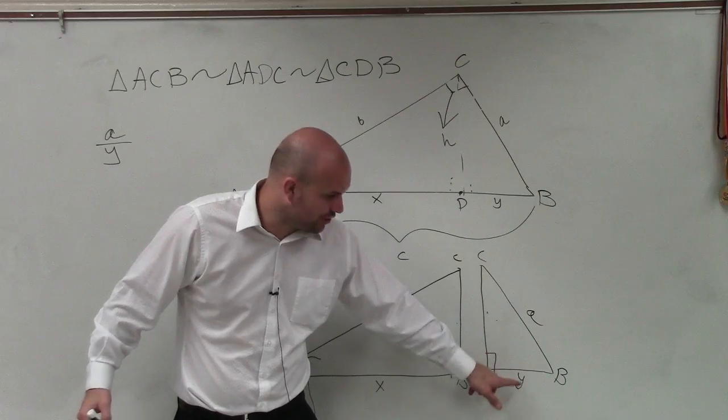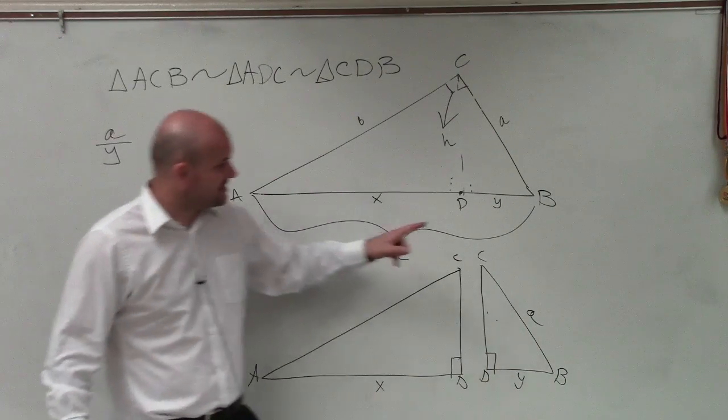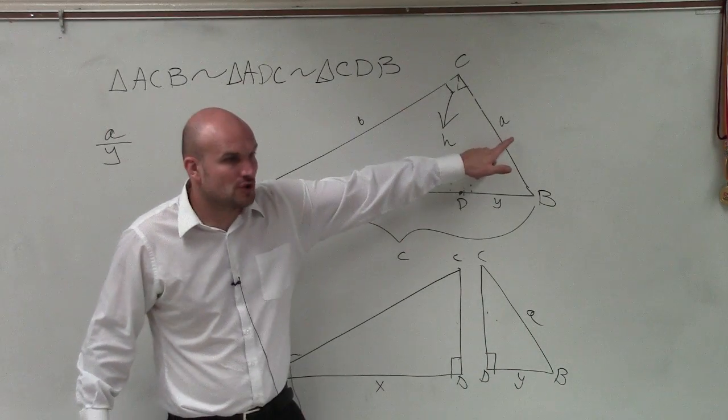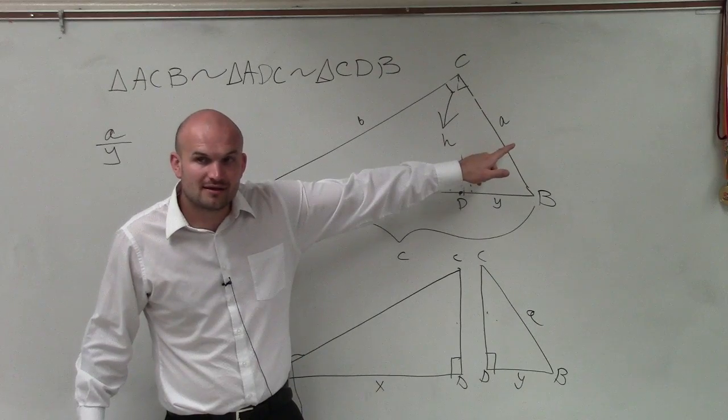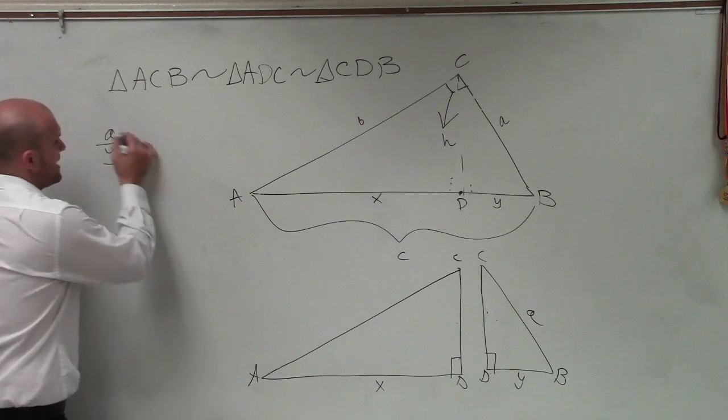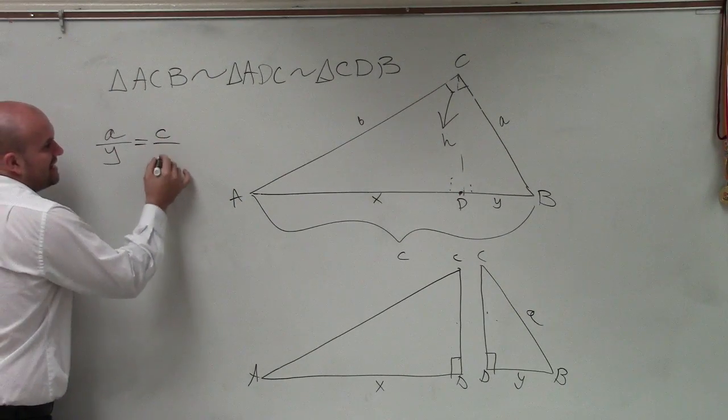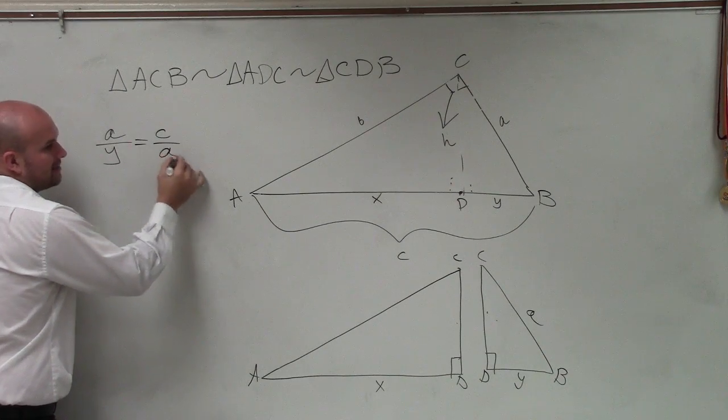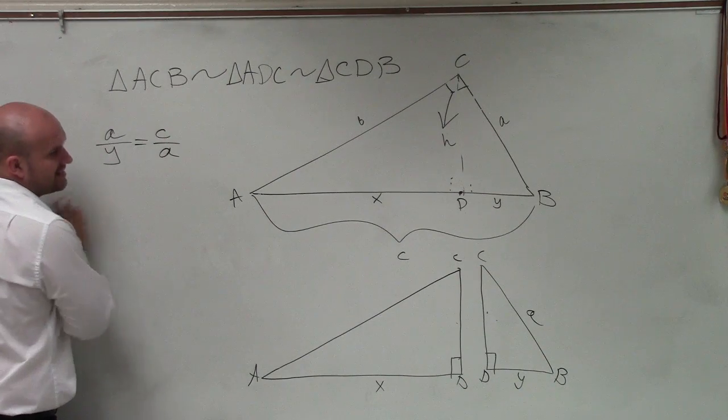So, hypotenuse to short leg is the same as hypotenuse to short leg. What's my short leg? A. So I can say a is to y as c is to a. Or, I'm sorry, yeah, c is to a.